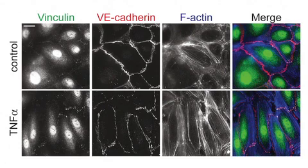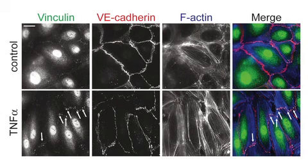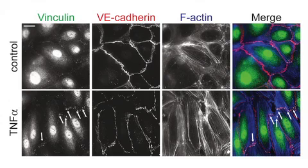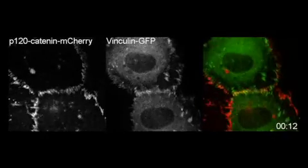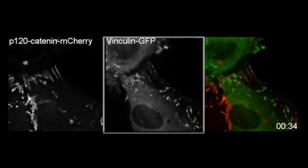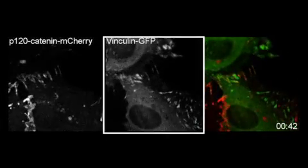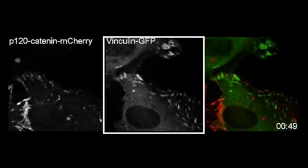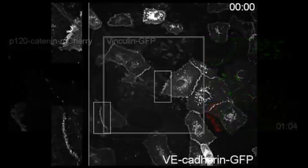With TNF-alpha, it takes much longer, but then the cells really start aligning, and they form very strong actin bundles, and they hit the interconnected spots — lots of vinculin there. And with thrombin, really fast — within minutes, these cells start pulling on their junctions, and you can see lots of vinculin going to the cell-cell junctions.